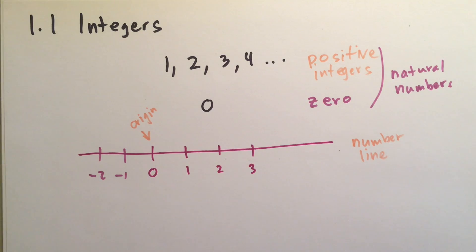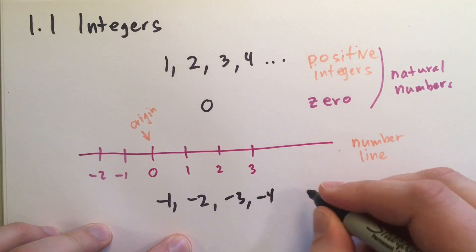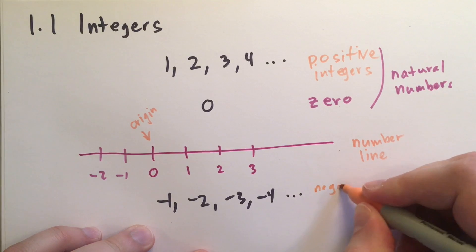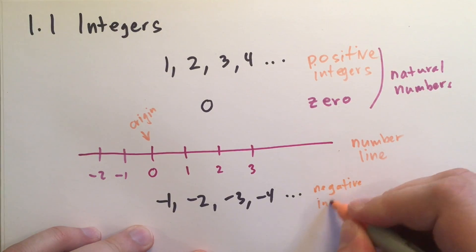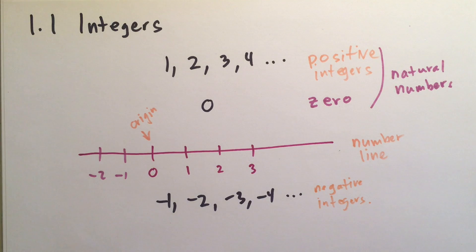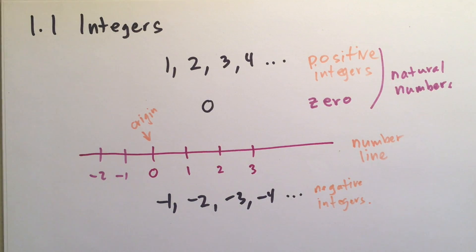And so these numbers, negative 1, negative 2, negative 3, etc. We call these the negative integers. Let me write that down for you. These are the negative integers. So, now you know about negative numbers. That's basically everything you need to know about them. We're going to learn what you can do with them later.